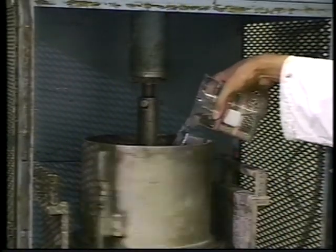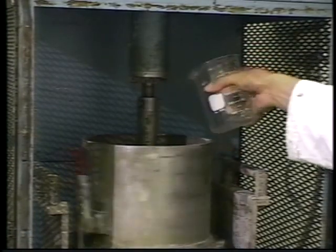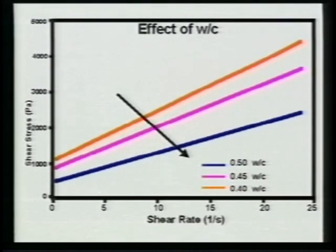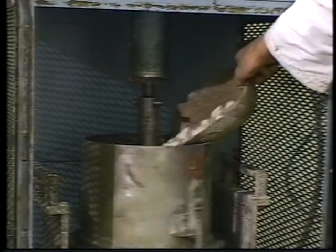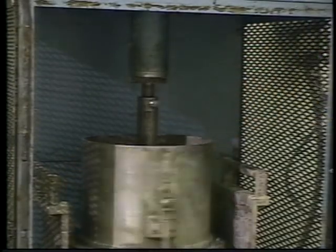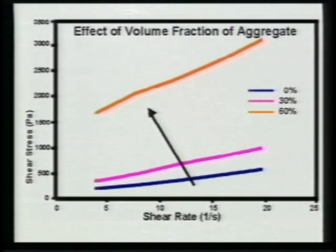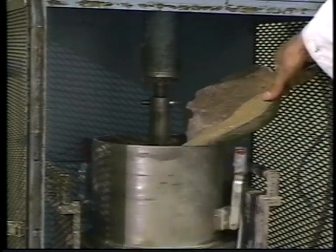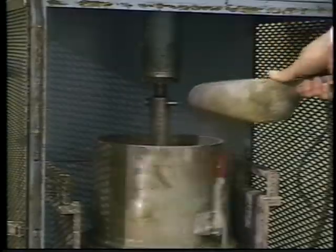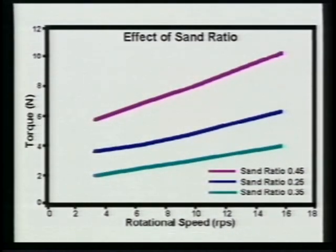If the concrete is too stiff to flow properly, adding more water reduces both the yield stress and the viscosity. Adding water, of course, increases the water-to-cement ratio and therefore decreases the ultimate strength. Adding more aggregate increases both the yield stress and the viscosity. As might be expected, this also works in the opposite direction — adding more cement paste is one way to reduce yield stress and viscosity. The grading of the aggregate is also important; a grading that packs more densely gives a more fluid mix. This is another way to reduce viscosity and yield stress without adding more water.